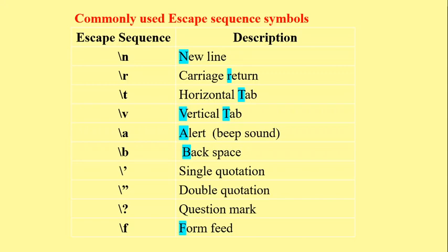When you press the Tab key on the keyboard, the cursor moves to the right by one tab position — in the same way, the cursor will also move in the output. Backslash v stands for vertical tab; it moves the cursor in the y-axis direction. Backslash a stands for alert, which is a beep sound.